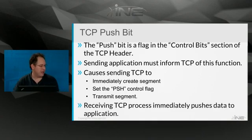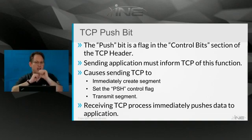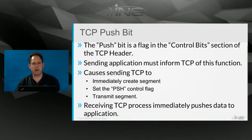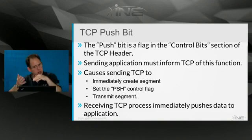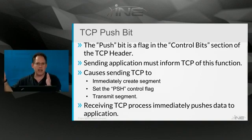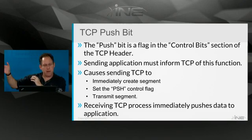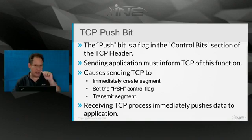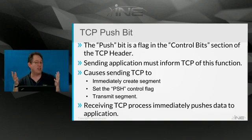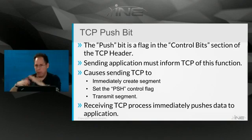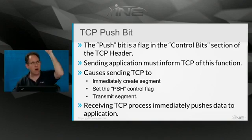The receiving TCP process immediately pushes the data to the application. Normally, TCP might store received bytes in a receive buffer and wait until it has a certain quantity before notifying the upper layer application. But when the receiving TCP process gets a segment with the push flag, it immediately says the next time the CPU gives the go-ahead, I'm going to tell the application: I've got some bytes right here, I'm not going to buffer any more, here are bytes that need to go upstream immediately.